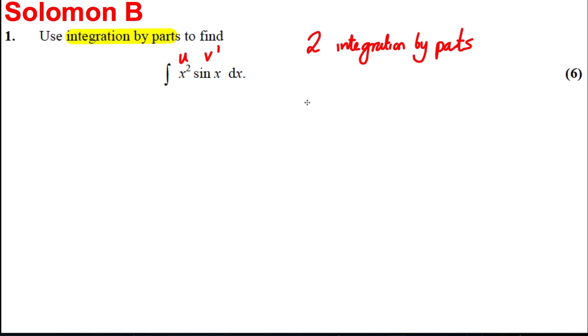Because I'm going to have to do the process twice. So firstly, my u is x squared, my u-dash is therefore 2x, my v-dash is sine x, and if I integrate sine x I get negative cos x. Now the integral, this is the formula I'm using, of uv-dash is uv minus the integral of u-dash v.